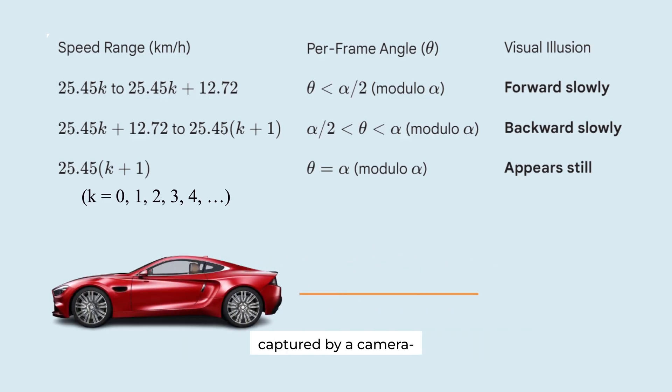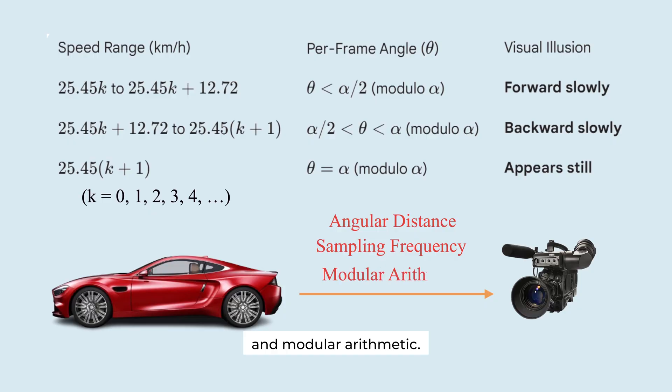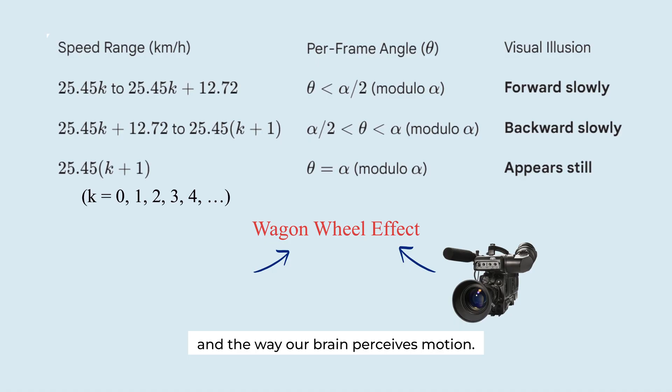A spinning wheel captured by your camera creates an interesting mathematical pattern: angular distance, sampling frequency, and modular arithmetic. The wagon wheel effect is a strangely beautiful phenomenon emerging from the delicate interplay between camera mechanics and the way our brain perceives motion.